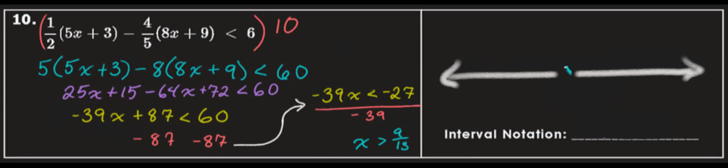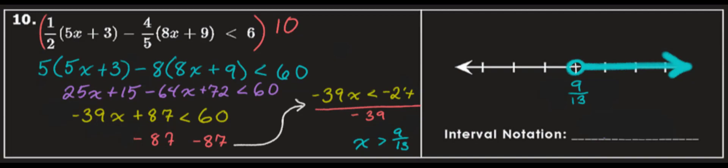You'll have an open circle at 9 over 13. X is greater than 9 over 13, so everything greater than 9 over 13. The interval notation is 9 over 13 non-inclusive to positive infinity non-inclusive.